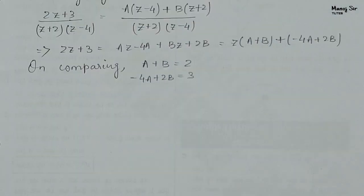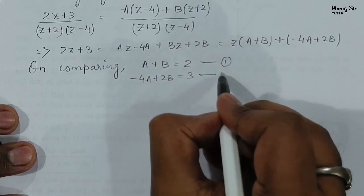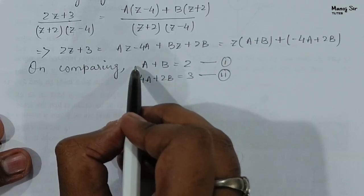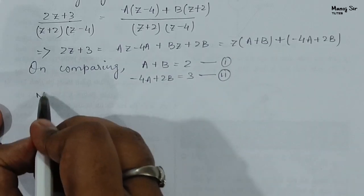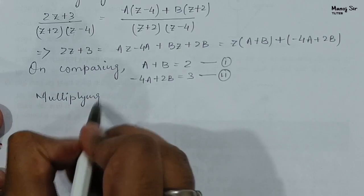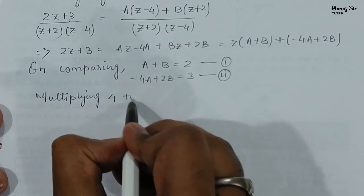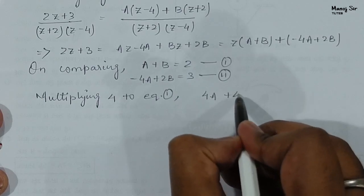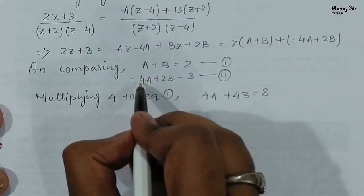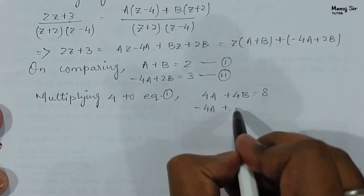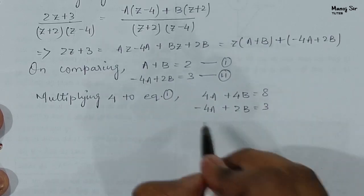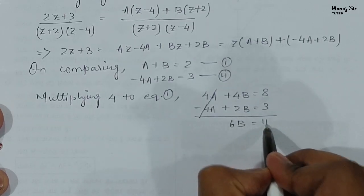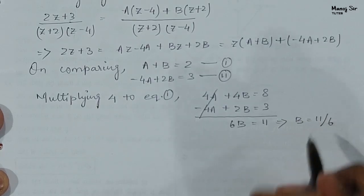Multiplying equation 1 by 4 gives 4A + 4B = 8. Adding this to equation 2, which is −4A + 2B = 3, the 4A and −4A cancel. We get 6B = 11, which implies B = 11/6.